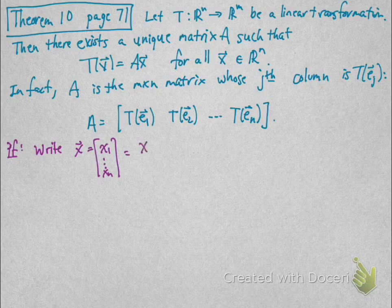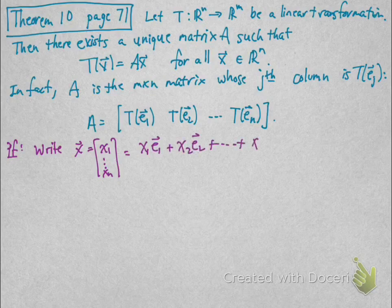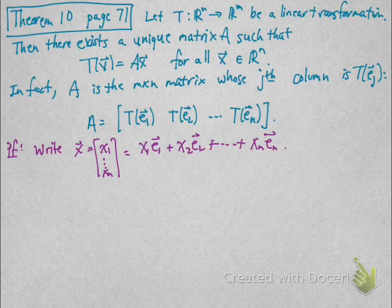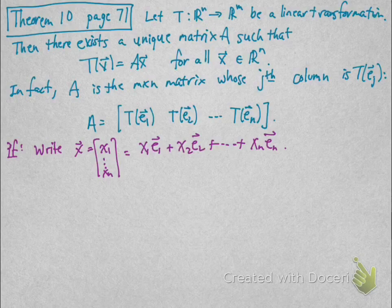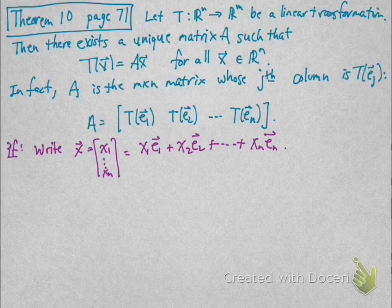For a proof, suppose you have a vector x with entries x_1 up to x_n. You can rewrite that as x_1 times E_1 plus x_2 times E_2 all the way up to x_n times E_n.